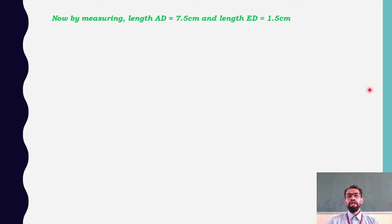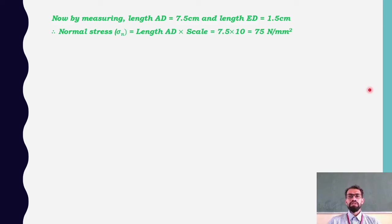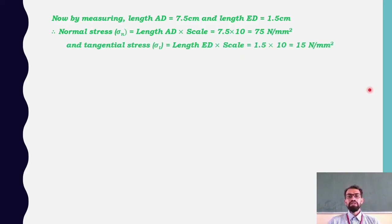Measuring from the Mohr circle: length AD = 7.5 cm and length ED = 1.5 cm. Therefore, normal stress sigma_n = AD × scale = 7.5 × 10 = 75 N/mm², and tangential stress sigma_t = ED × scale = 1.5 × 10 = 15 N/mm².